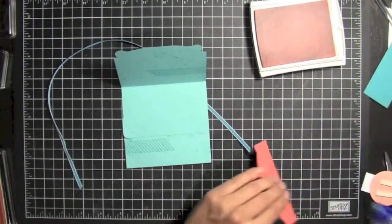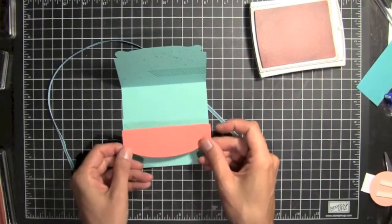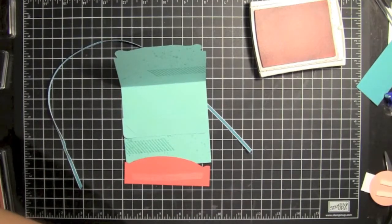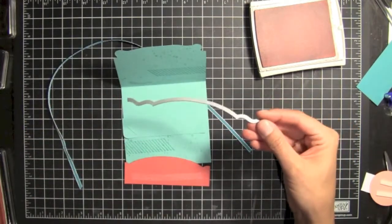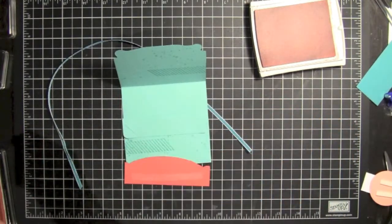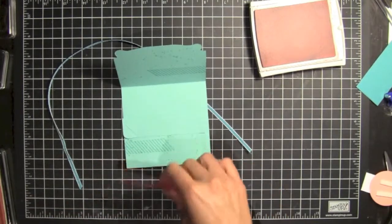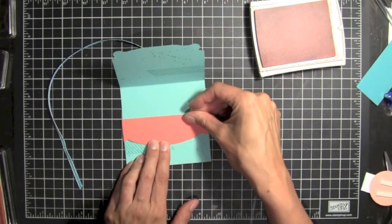And then inside, to kind of add a little bit of decorative flair, I've used the Edgelet. Edgelet, it's this one from the Adorning Accents. And I've just cut out a piece of Coral Calypso to add a punch of color to the inside of our project. And I'll just line that up up here.